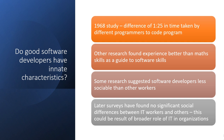In 1968, a study found a difference of 1 to 25 in the time taken by different programmers to code a program — among 25 people, there was a ratio difference of 1 to 25. Other researchers found experience to be a better guide to software skills than math skills. Some research suggested that software developers are less social than other workers — they prefer to work in silence and peace of mind, and are less interactive with other employees.